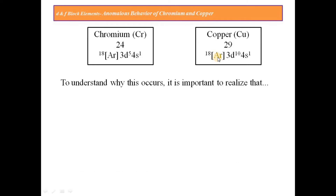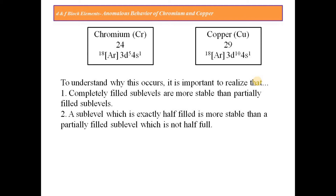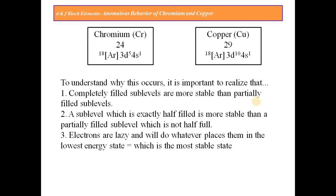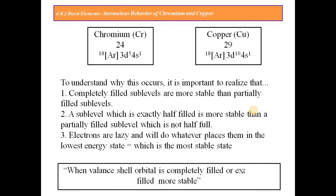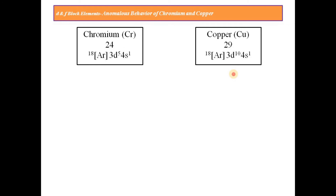To understand why this occurs, it is important to realize that completely filled sub-levels are more stable than partially filled sub-levels. A sub-level which is exactly half-filled is more stable than a partially filled sub-level which is not half-full. Electrons will do whatever places them in the lowest energy state, which is the most stable state. When a valence orbital is completely filled or exactly half-filled, that element is more stable.